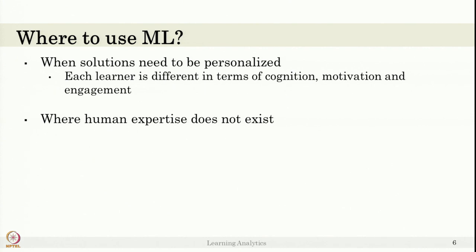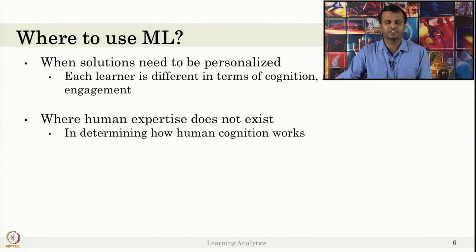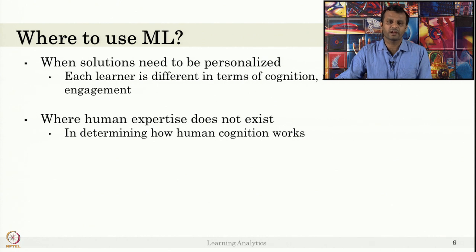Also, where human expertise does not exist — for example, how human cognition works — we still do not know exactly one model that fits every student for every subject. If you do not know how human cognition works for a particular subject in a particular time interval, it is not possible for humans to create a model for that. Maybe we can use machine learning algorithms to get data from student interactions and provide recommendations or feedback. And when the rules are difficult to extract, we can apply machine learning algorithms when it is not easy to create a model by manual inspection.